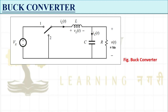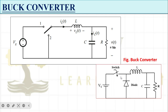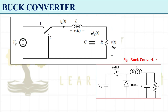This is the figure of the buck converter — you may already be familiar with it. One diode and one switch are present. Such a configuration is called an asynchronous buck converter. When the diode is replaced by another switch, we call it a synchronous buck converter. So either one is a switch and another is a diode, or both are switches.